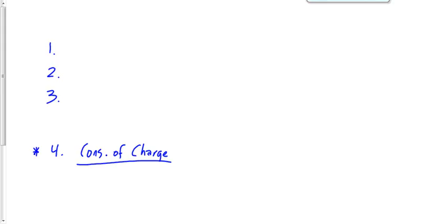I'm going to do another example like I did on Thursday. Let's say you've got three charges: plus 5 coulombs, minus 2 coulombs, and 0 coulombs. This third one is neutrally charged.